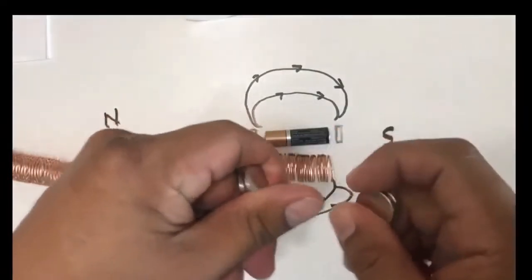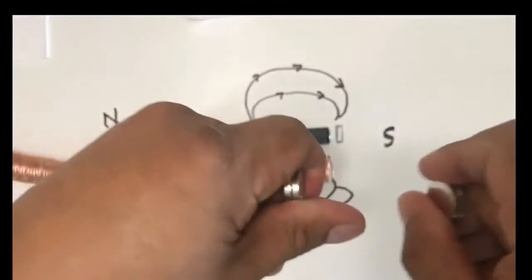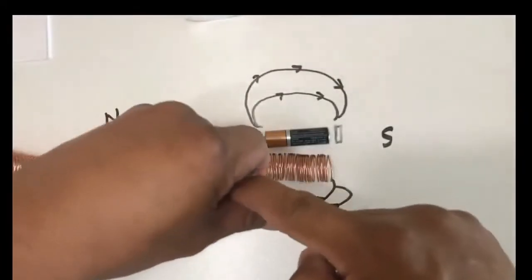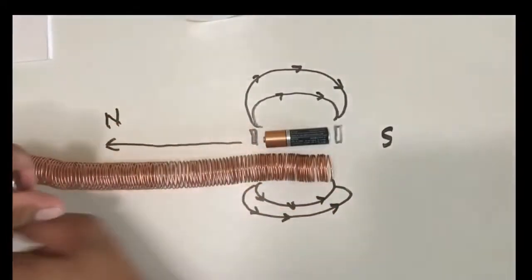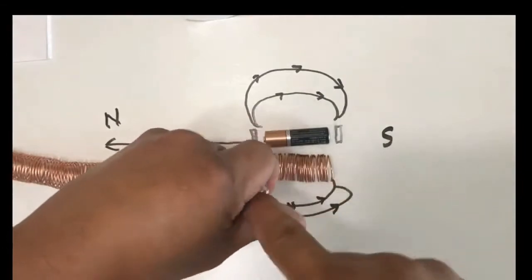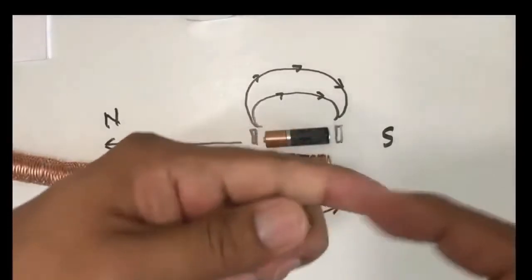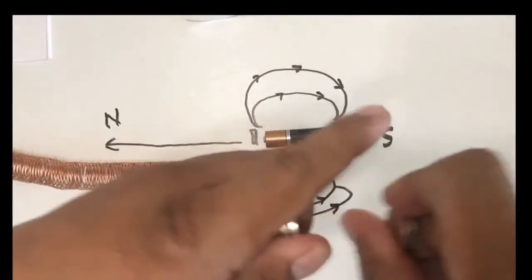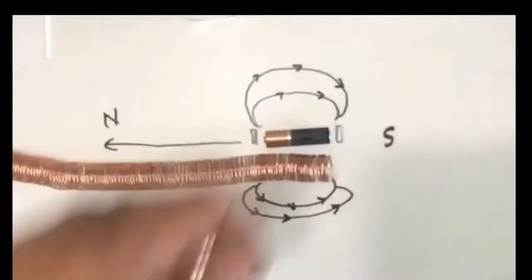So we want this one and this face of the magnet to be opposite each other so that they repel. And then this one should be north so that it goes this way. And if this is north here, this must be south. This must also be south so that they repel each other. And then this must be the north.